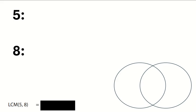Now let's see if this listing method works with 5 and 8. Let's go ahead and skip count by 5s. So we're going to do 5, 10, 15, 20, 25, 30, 35, 40.